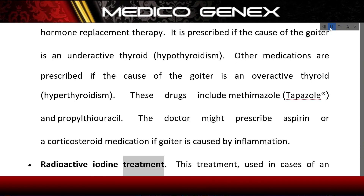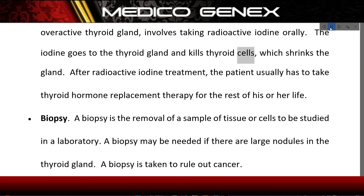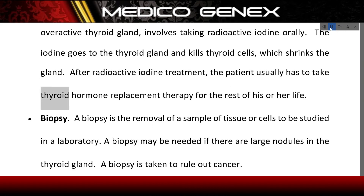Radioactive iodine treatment: This treatment, used in cases of an overactive thyroid gland, involves taking radioactive iodine orally. The iodine goes to the thyroid gland and kills thyroid cells, which shrinks the gland. After radioactive iodine treatment, the patient usually has to take thyroid hormone replacement therapy for the rest of his or her life.